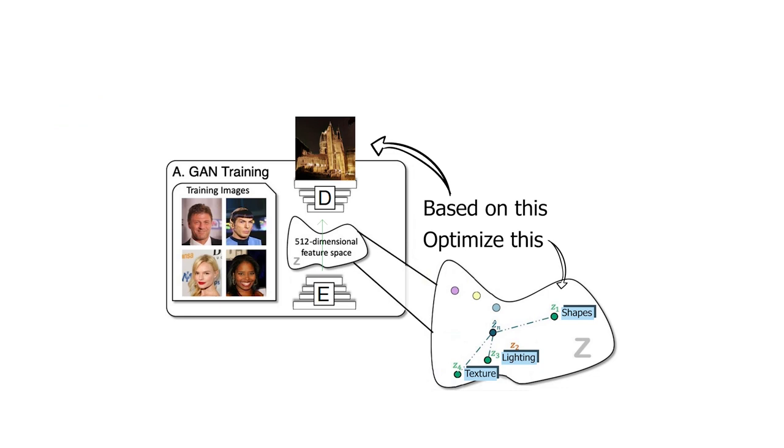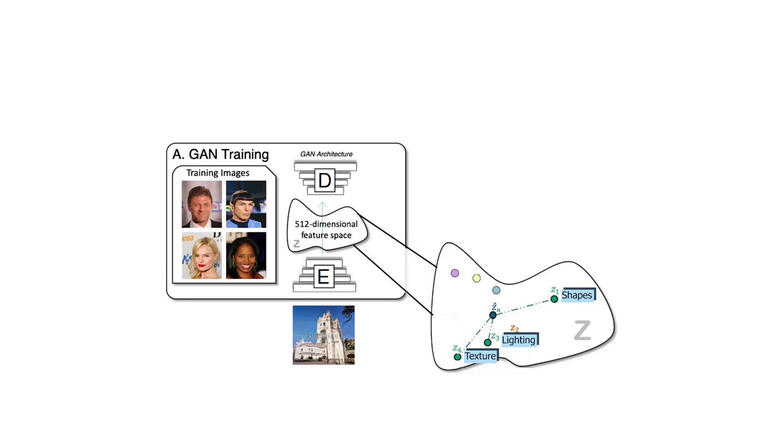Then you will use another model called a discriminator to measure the quality of the generated images during training. Both models will improve together and you will ideally end up with a powerful generative model able to replicate your true images, which are the ones in your dataset. You can learn more about GANs in my previous videos.